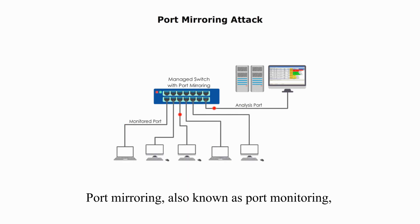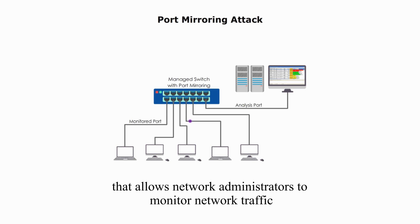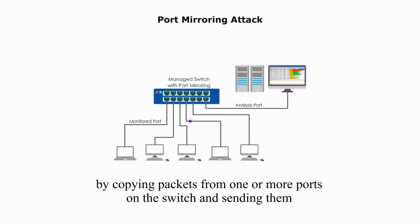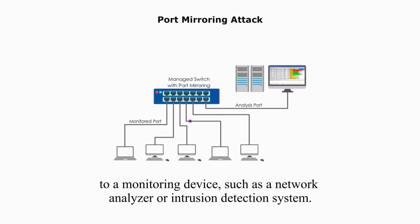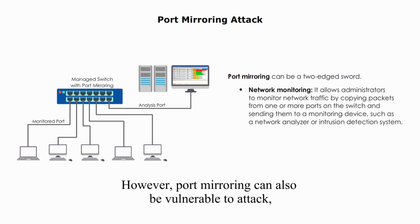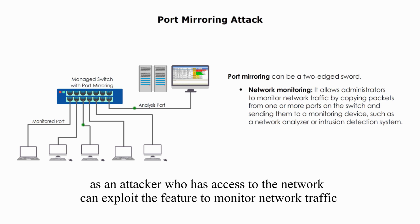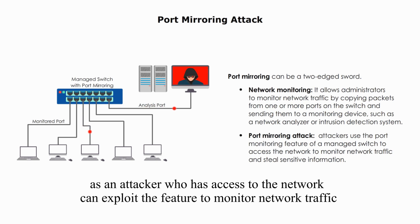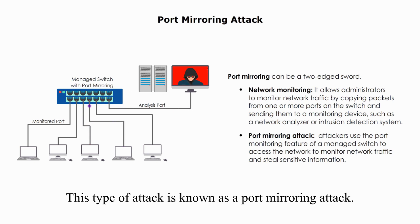Port mirroring, also known as port monitoring, is a feature of some network switches that allows network administrators to monitor network traffic by copying packets from one or more ports on the switch and sending them to a monitoring device such as a network analyzer or intrusion detection system. However, port mirroring can also be vulnerable to attack, as an attacker who has access to the network can exploit the feature to monitor network traffic and steal sensitive information. This type of attack is known as a port mirroring attack.